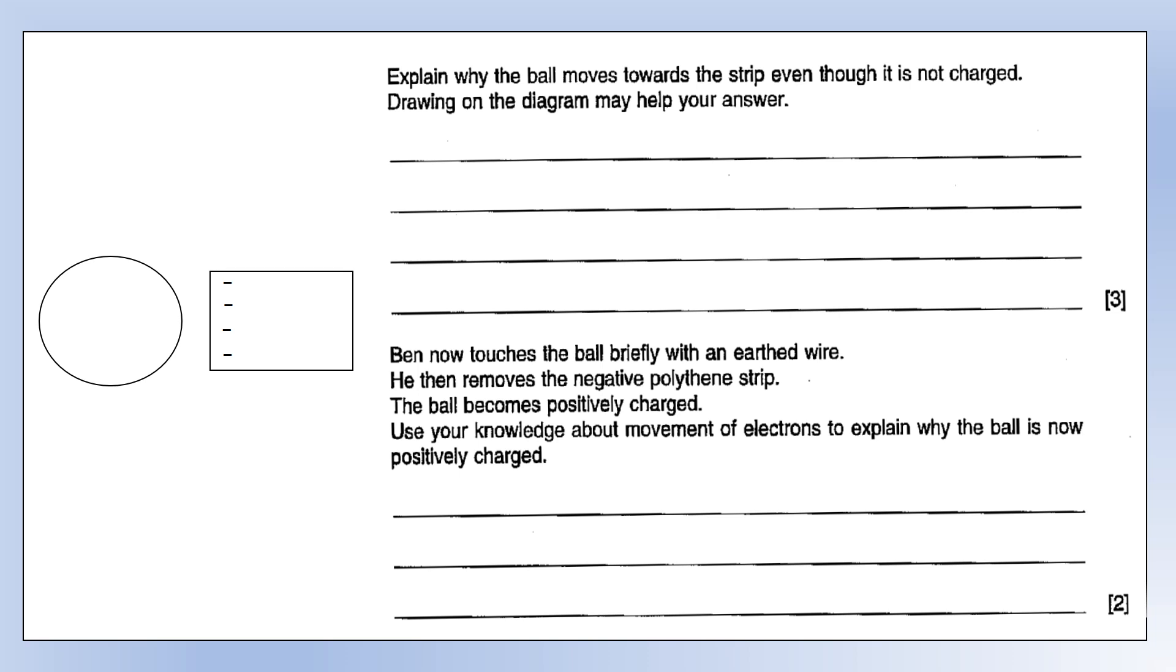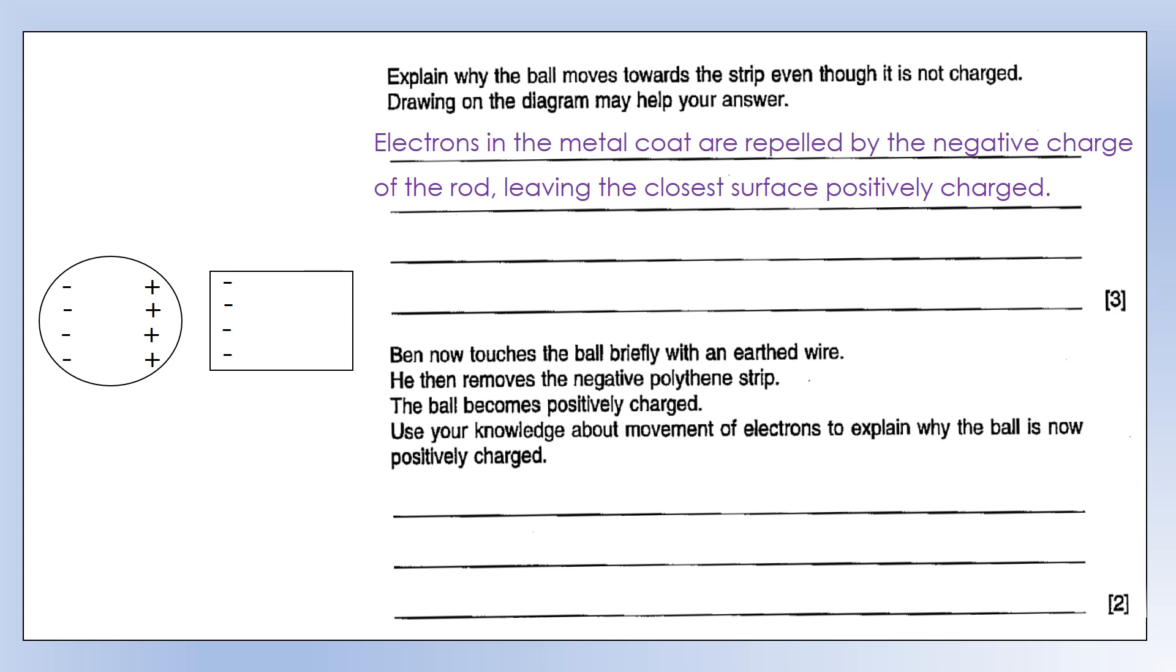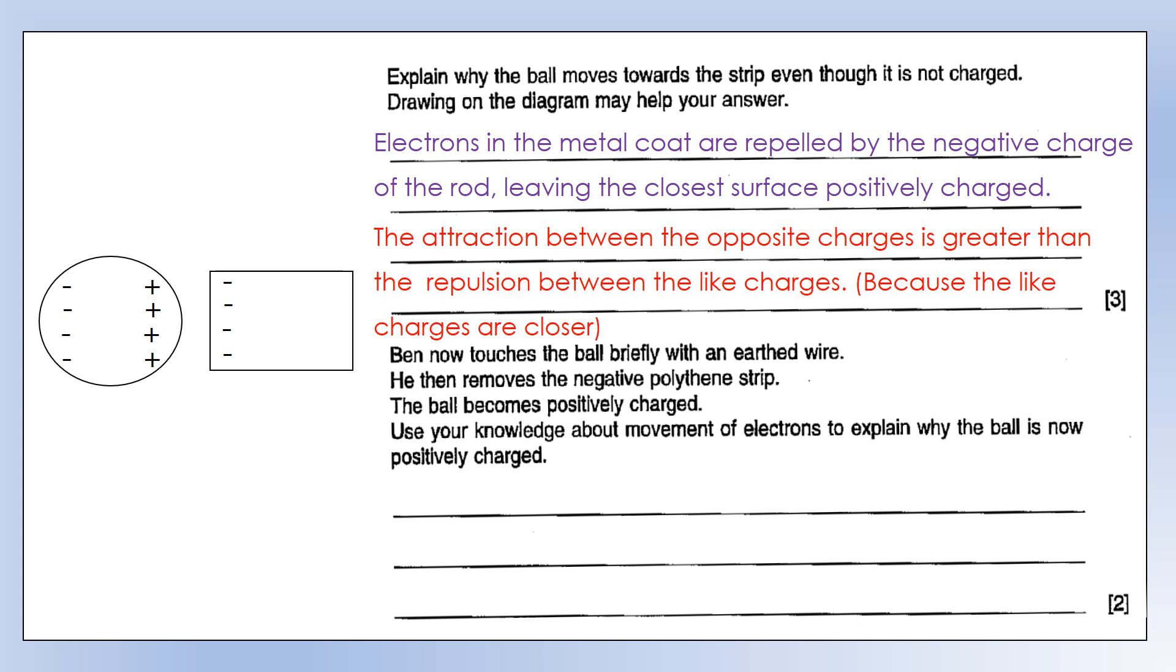Explain why the ball moves towards the strip even though it's not charged. The polythene is negatively charged, so that polythene is going to induce a charge on the metal coating of the ball. The electrons in the metal coat are going to be pushed away or repelled by the negative charge of the polythene. That's going to leave the closest surface being positively charged. That's why it's attracted. The attraction between the opposite charges is going to be much bigger than the repulsion between the like charges, and that's because the opposite charges are closer together.